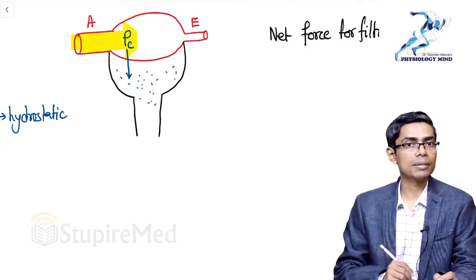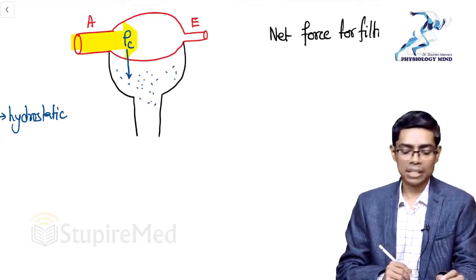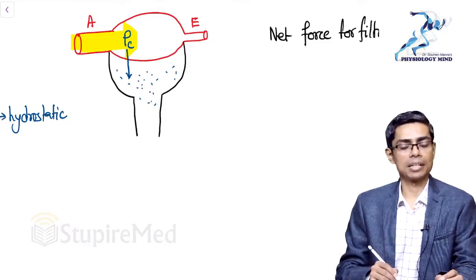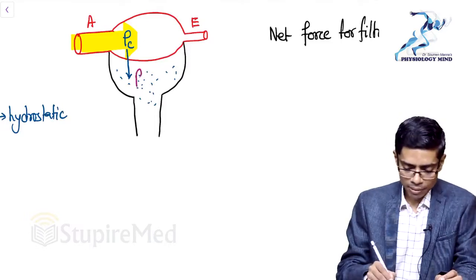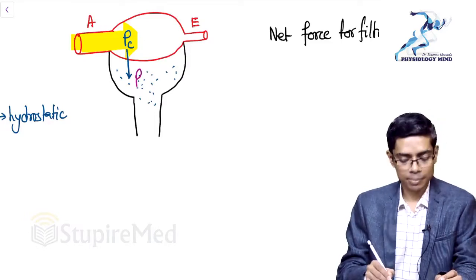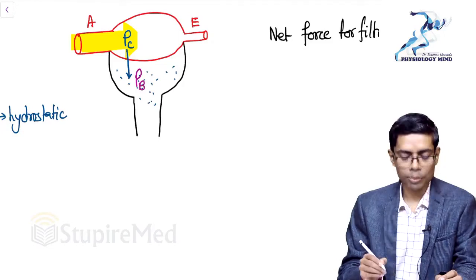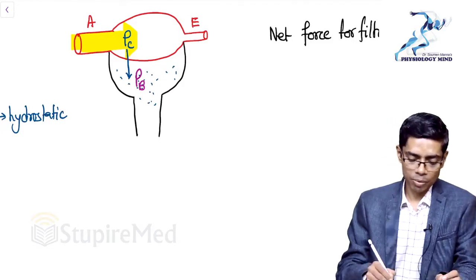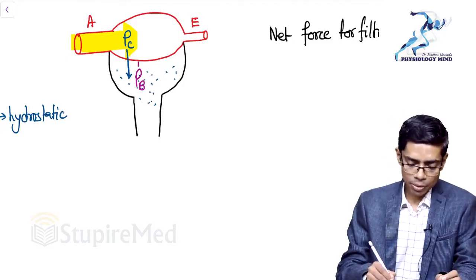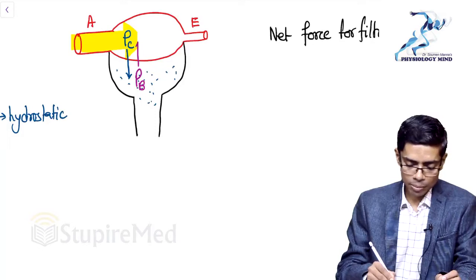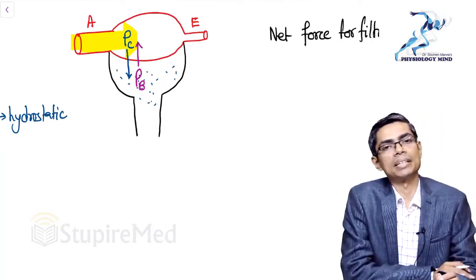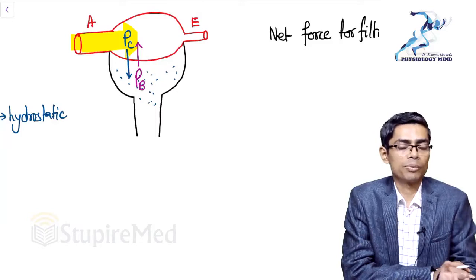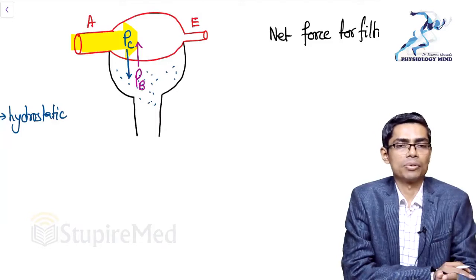Bowman's capsule will also have some water because continuous filtration is going on, so it will also have hydrostatic pressure, denoted Pb — P for hydrostatic pressure, B for Bowman's capsule. The hydrostatic pressure of Bowman's capsule will try to push fluid back into the capillary. So both forces act opposite to each other.